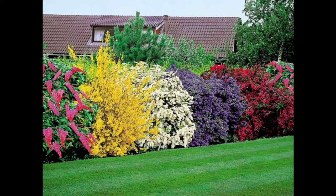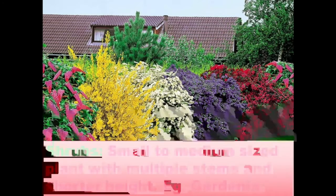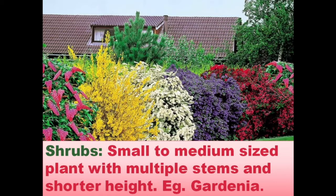A shrub is also called a bush. It is a small to medium sized plant, and we can distinguish it from a tree because the branches start just above the ground. Shrubs have a persistent woody stem near the base, and are distinguished from trees by their multiple stems and shorter height.